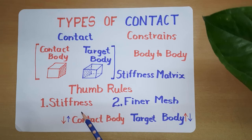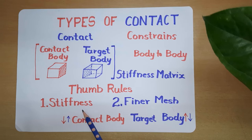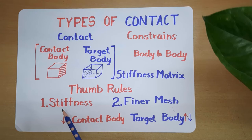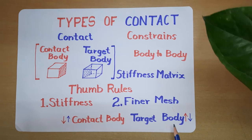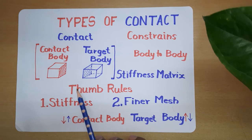The first one is based on stiffness and the second one is based on finer mesh. For the stiffness thumb rule: when defining a contact and a target body, the lower stiffness body will be considered as the contact body and the higher stiffness body is considered as the target body, when comparing these two bodies touching each other.